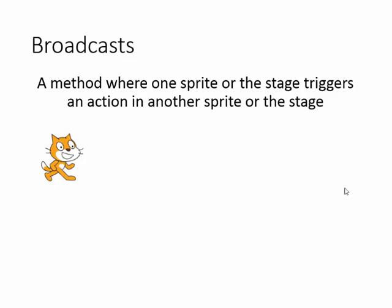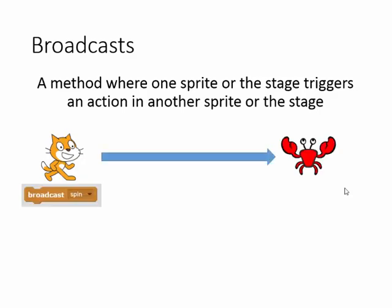So let's see if we can understand, and in fact it's worth saying it's the code inside the sprite or the code inside the stage that triggers the action. Say we've got the cat here, that's one of our sprites, and it wants to trigger something in this crab over here.